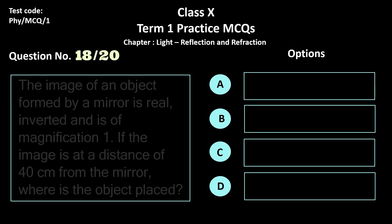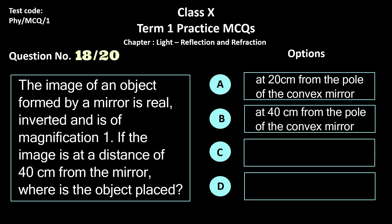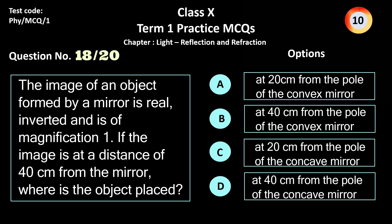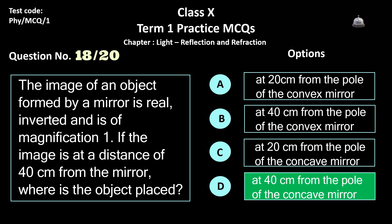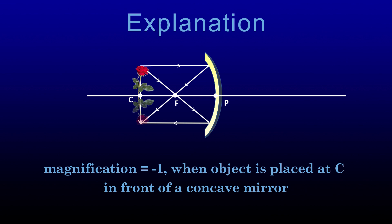Question 18. The image of an object formed by a mirror is real, inverted and has magnification 1. If the image is at a distance of 40 cm from the mirror, where is the object placed? Options: a) at 20 cm from the pole of the convex mirror, b) at 40 cm from the pole of the convex mirror, c) at 20 cm from the pole of the concave mirror, and d) at 40 cm from the pole of the concave mirror. The correct answer is option d. As magnification is 1 and the image is real, it is a concave mirror and the object is placed at the center of curvature, 40 cm away.